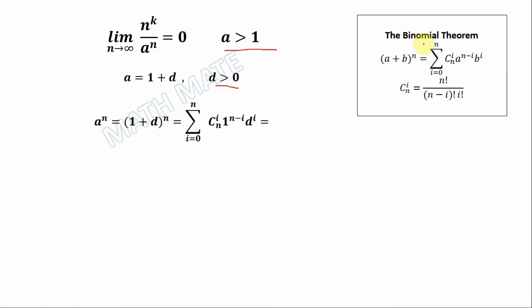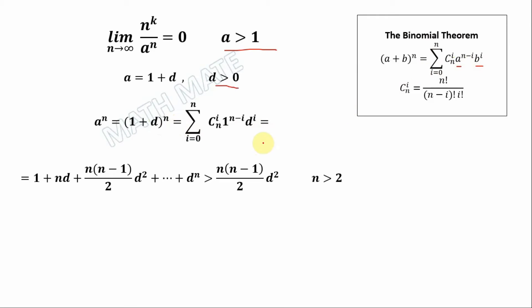This we can write by using the binomial theorem. We put 1 instead of a and d instead of b. In the next step, we calculate C(n,0), which is n factorial divided by n factorial — we cancel them out and multiply by a to the zero power, which keeps a one.